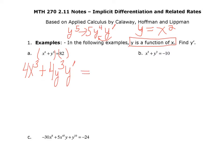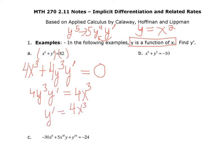The derivative of 82 is 0. Now we're going to solve this for y prime. Subtract 4x cubed from both sides, so we have 4y cubed y prime equals negative 4x cubed. Then divide by 4y cubed on both sides and simplify.